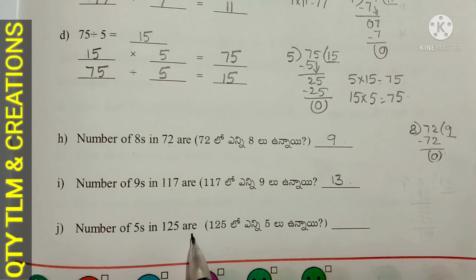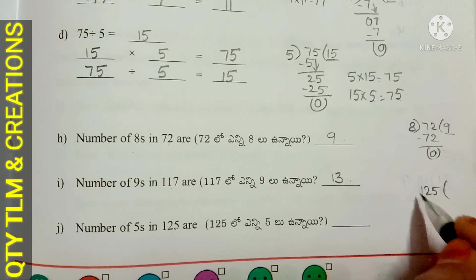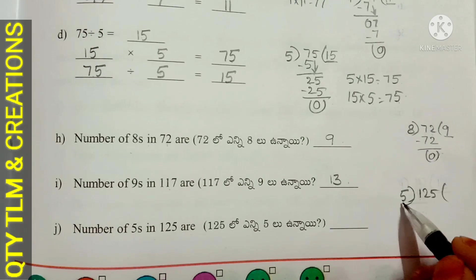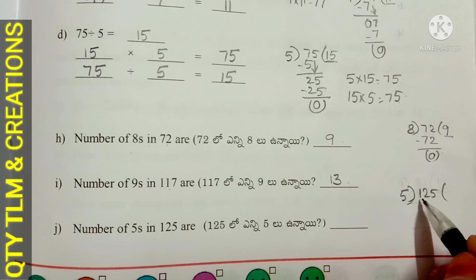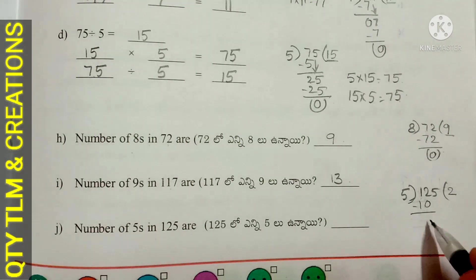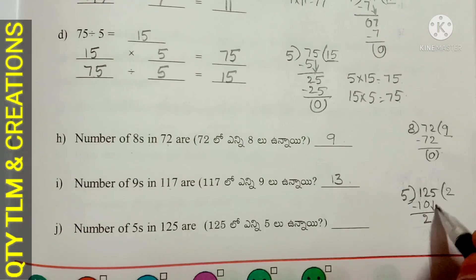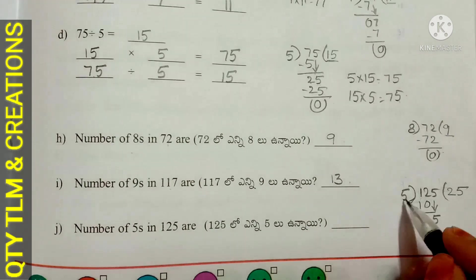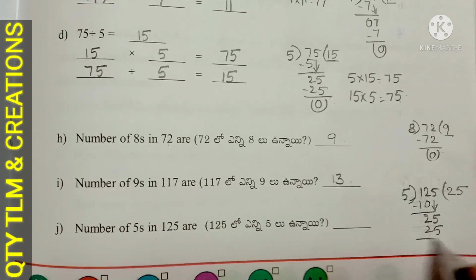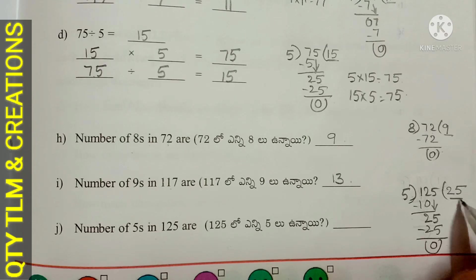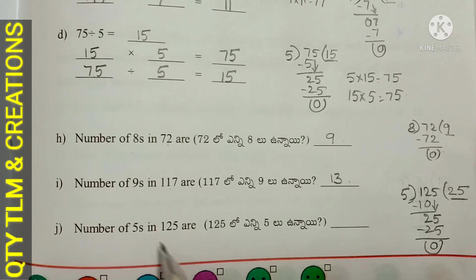Next question: Number of 5s in 125. 125 divided by 5. We start from the hundreds place, that is 1. 5 cannot divide 1, so we take 1 and 2 together: 12. 5 divides 12 for 2 times; 5 twos are 10. Subtract 10 from 12, we get 2. Bring down 5: 25. 5 divides 25 for 5 times; remainder is 0, quotient is 25. There are 25 fives in 125.